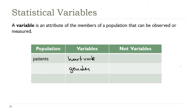What else? Blood pressure is a measurement, but it's a slightly tricky one — blood pressures are usually given with two values: the systolic pressure and the diastolic pressure. So blood pressure is an attribute that describes a member of our population, making it a variable, but classifying it can be a little challenging because of its composite nature.